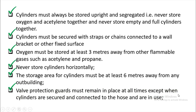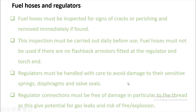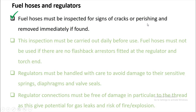Valve protection guards must remain in place at all times except when the cylinder is in use and connected to a hose. The valve is made of copper and must be protected at all times. Fuel hoses must be inspected daily for signs of cracks or perishing and removed from service immediately if damage is found, as damaged hoses create leaks that can start a fire or explosion.